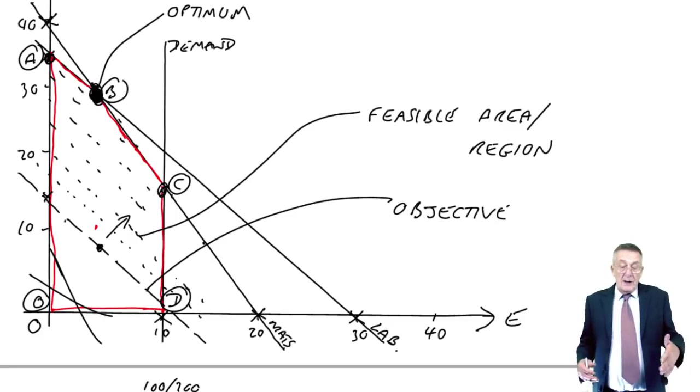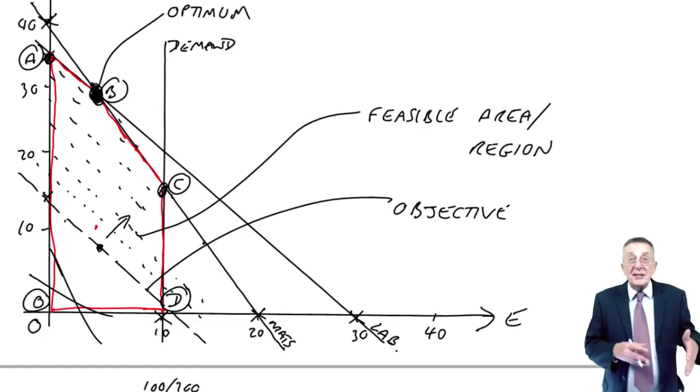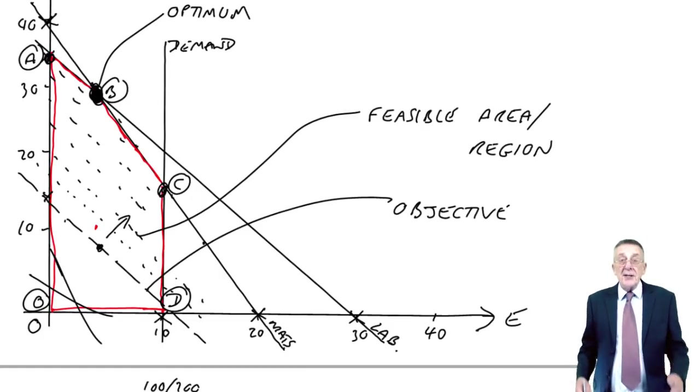Can we just, instead of doing what I did, could we just check what the profit is at each of those four corners, whichever is the best? Well, the answer is yes, no problem. By all means, work out what it would be at point A.